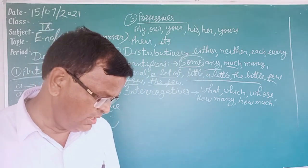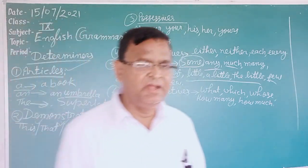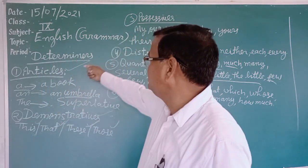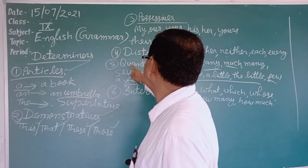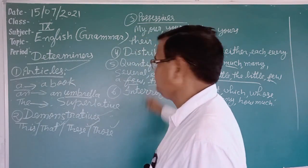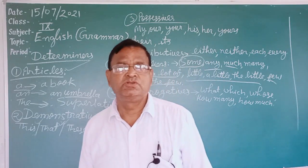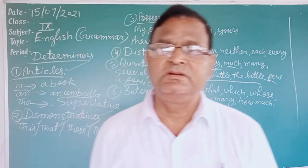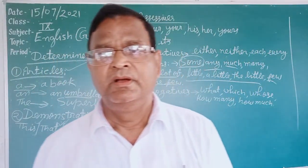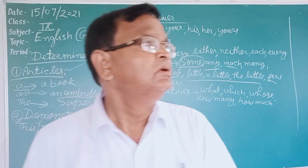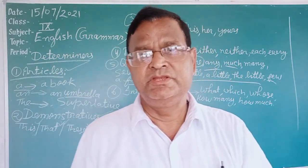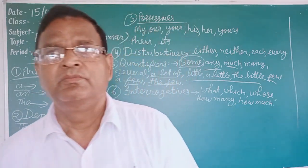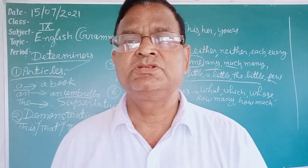So determiners are the words that identify or specify a noun, and they are of six types: articles, demonstratives, possessives, distributives, quantifiers, and interrogatives. Students, you should write all these determiners in your notebook and learn them. From tomorrow, there will be a revision — revision will be there, and then a test.